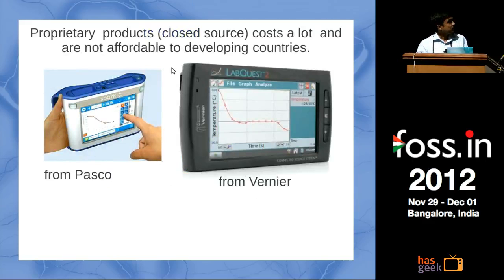The other devices are mainly from Pasco, Verway, and Vernier, and they start something like 500 dollars and are not flexible enough because they are closed systems. You don't get the source code or you cannot modify things. So that way this is much, much better.